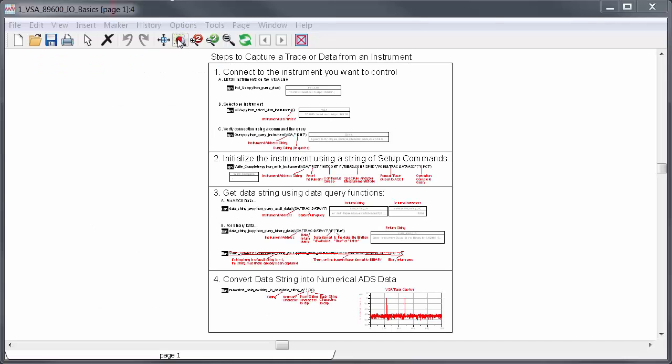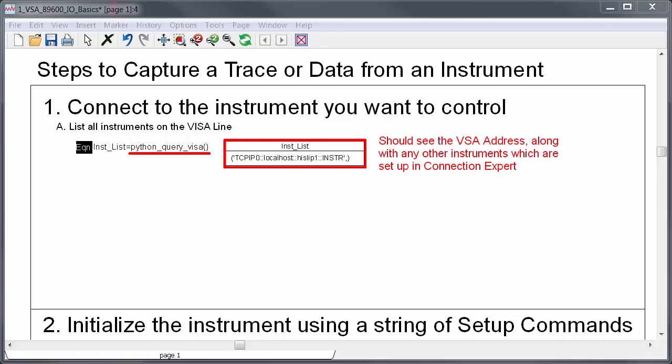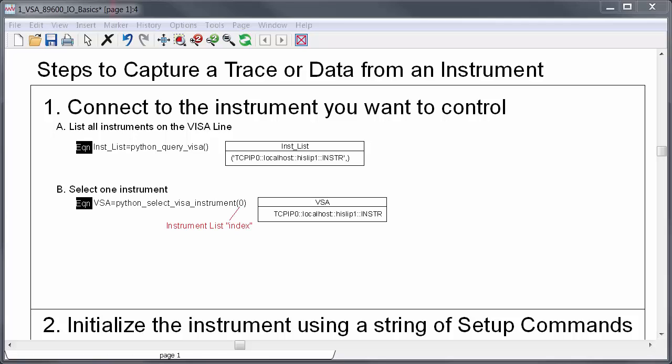If you're doing all of this for the first time, you should probably start by checking that everything is configured properly. One way to see if everything's working is to query the VISA line to identify all of the connected instruments, and you can do that using this function, python query visa parentheses. This returns a list of all the instruments on the line, and if you don't see the VSA address here, you probably missed one of the setup steps earlier. For me, the query visa line returned one instrument, the VSA software, but for you again, it might return more. Either way, to connect the VSA, we need to actually select only that instrument address. You could type it out, but it's easier to just use this equation, which is python select visa instrument, and then specify the index. Here it's index zero, but of course if there are multiple instruments, it could be index one, two, three, etc. And this returns the address string for the VSA.